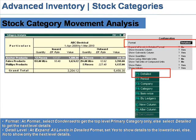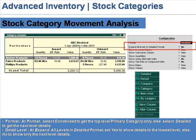Select Detail to get the next level of details. At Detail Level, set Expand All Levels in detailed format. Set Yes to show details down to the lowest level, or set No to show only the next level reports.